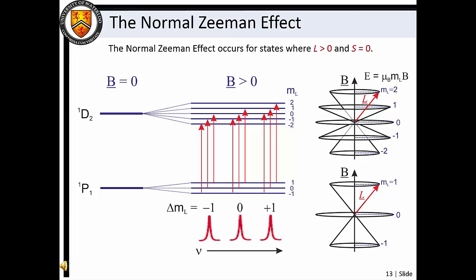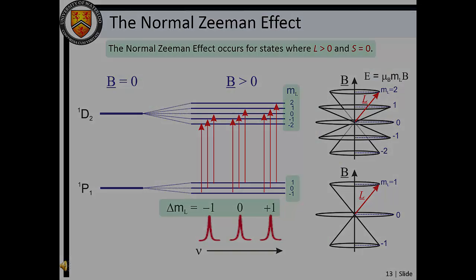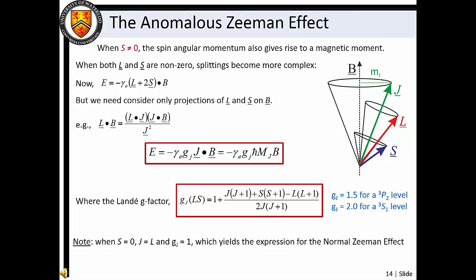The interaction between external magnetic fields and singlet states with L greater than zero is known as the normal Zeeman effect. In the diagram shown here, the normal Zeeman effect causes a singlet D2 level to split into five states and a singlet P1 level to split into three states. As a result, the single spectral line observed under field-free conditions splits into three lines, which are associated with ΔM_J = −1, 0, and +1 transitions. Remember that because S equals zero, M_L is the same as M_J.